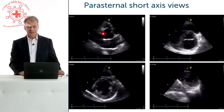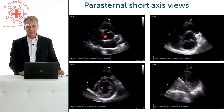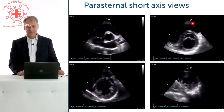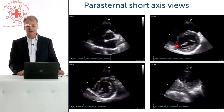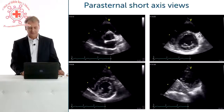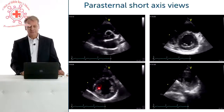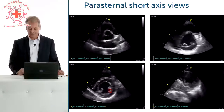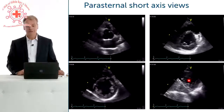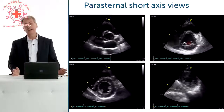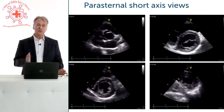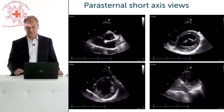To summarize the parasternal short axis view: if we scan from cranial to caudal, we get the base with the aortic valve in the center, then at the level of the mitral valve the typical fish mouth appearance of the anterior and posterior leaflets, then the left ventricle at the level of the subvalvular apparatus and papillary muscles, and finally the view at the apex. Don't forget that there are many views in between, and it's advisable not only to look at the standard views but to scan through the entire heart. This basically summarizes the parasternal window. In the next chapters we'll look at another very important window — the apical window.